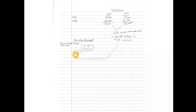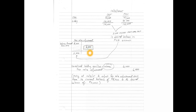We want to adjust the fair value adjustment account down from $8,000 to $2,000. The entry is: credit the securities fair value adjustment account $6,000, and debit unrealized holding gain or loss — income account — for $6,000. This brings the account balance down to the desired $2,000, and as a byproduct, we report an unrealized holding loss of $6,000 on the income statement for 2015.